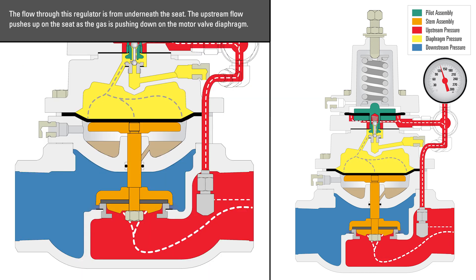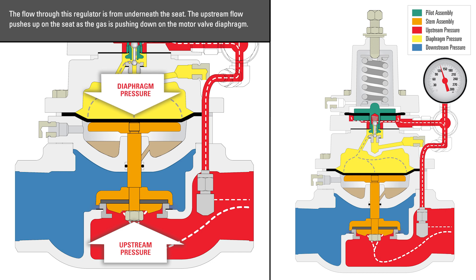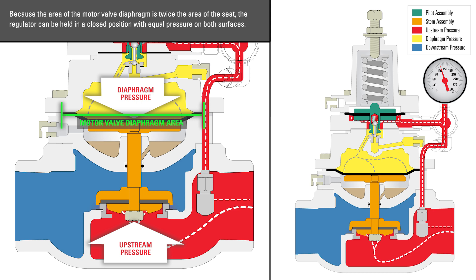The flow through this regulator is from underneath the seat. The upstream flow pushes up on the seat as the gas is pushing down on the motor valve diaphragm. Because the area of the motor valve diaphragm is twice the area of the seat, the regulator can be held in a closed position with equal pressure on both surfaces.